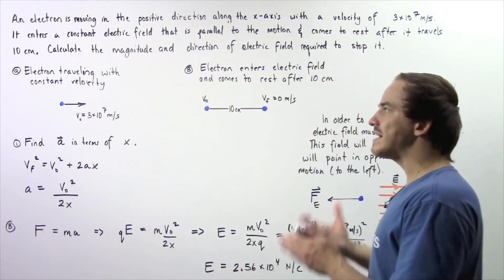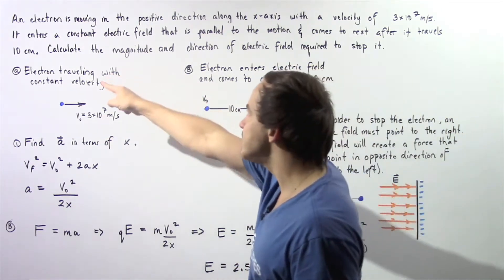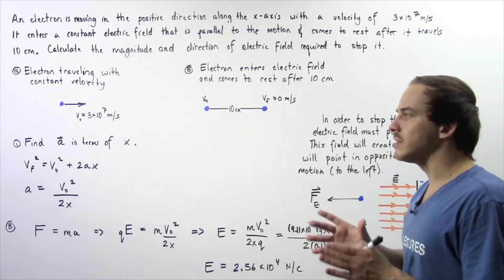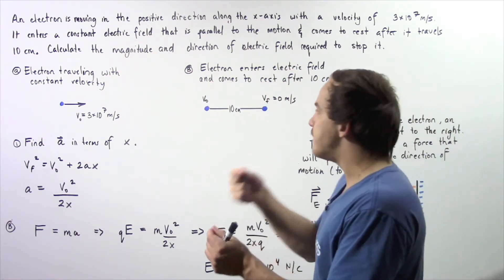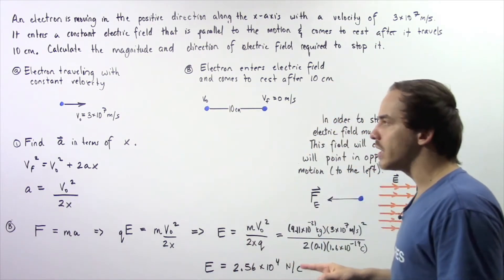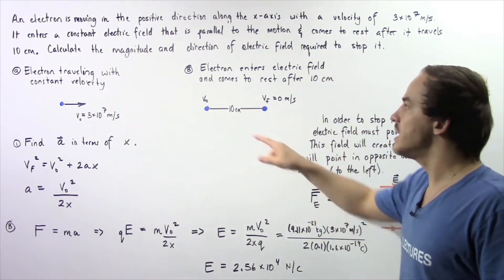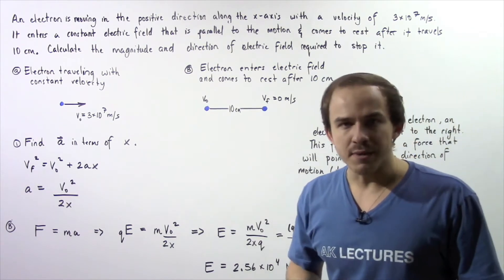Eventually that electron enters a constant electric field, and that constant electric field exerts a force on that electron, stopping the electron after it travels for 10 centimeters.